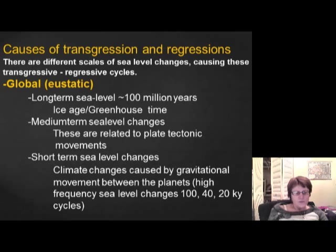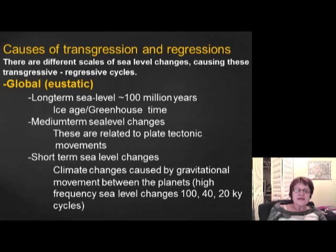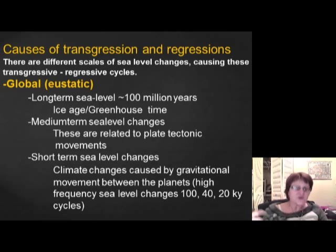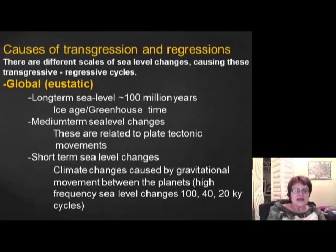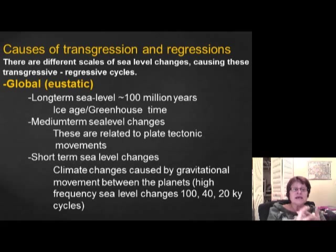Short-term sea level changes are caused by climate changes driven by gravitational forces in the solar system — the gravity of different planets affecting Earth. These are high-frequency, very cyclic changes. There is a 100,000-year cycle, a 40,000-year cycle, and a 20,000-year cycle. These are the high-frequency gravitational cycles between planets in the solar system that drive short-term sea level changes.